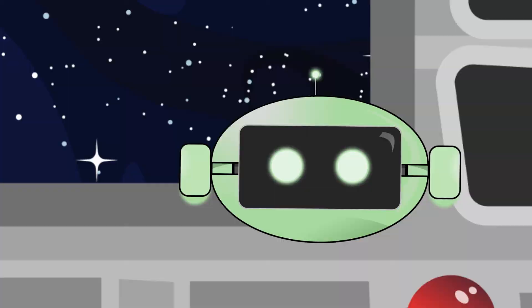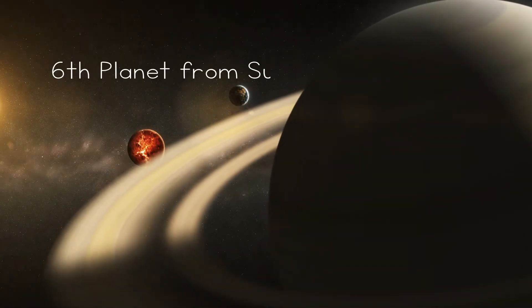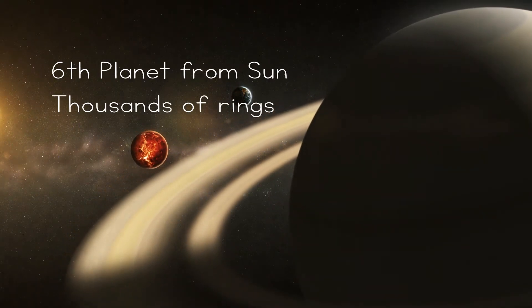What a storm! What about Saturn? I know it has rings. Yes! It's the sixth planet from the sun and is known for its thousands of rings, which are made up of chunks of ice and rock.